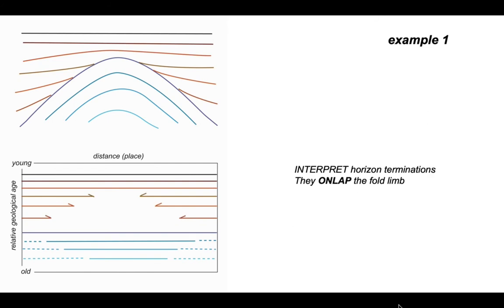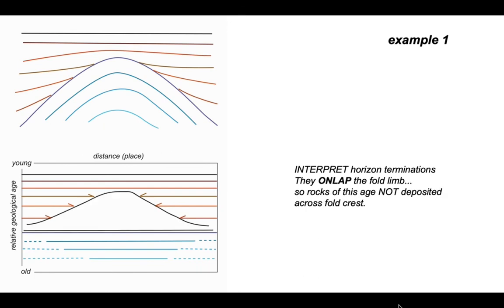Now let's interpret it. Using half arrows, we show how these horizons terminate towards the fold — they onlap the fold limb, and this is shown with half arrows on the chronostrat diagram. The area between those arrowheads, with no rocks, represents an area of non-deposition. So on the cross-section, within that geological period, there is no deposition. That's example one.